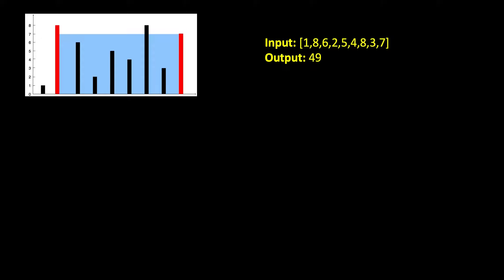The problem gives you some bars of different lengths and an input array denoting the height of those bars. For example, the heights are 1, 8, 6, 2, 5, 4, 8, 3, and 7.